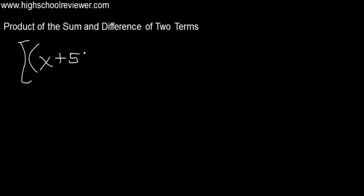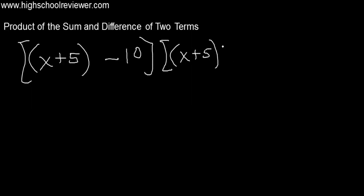Let's have another example. We have the quantity of x plus 5 minus 10, multiplied by the quantity of x plus 5 plus 10. As you can see here, our first term is x plus 5, and our second term is 10.